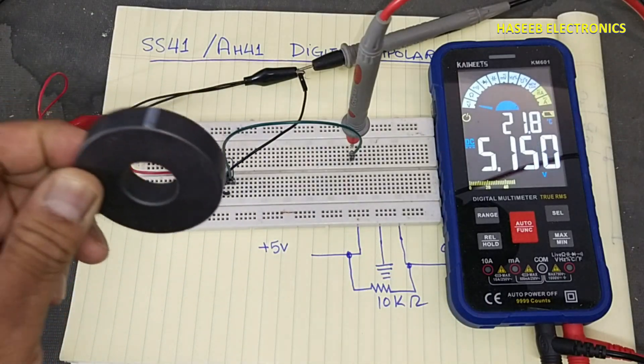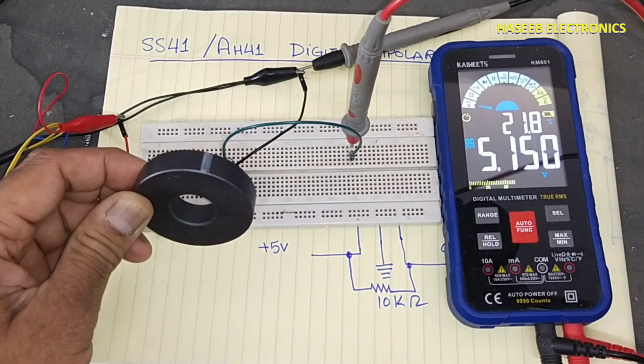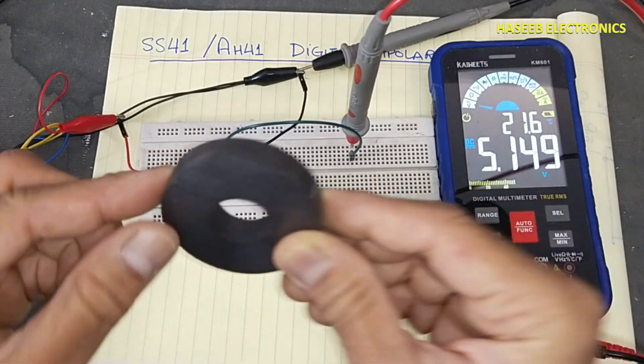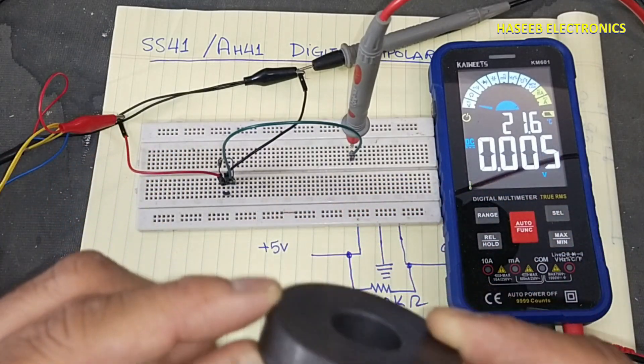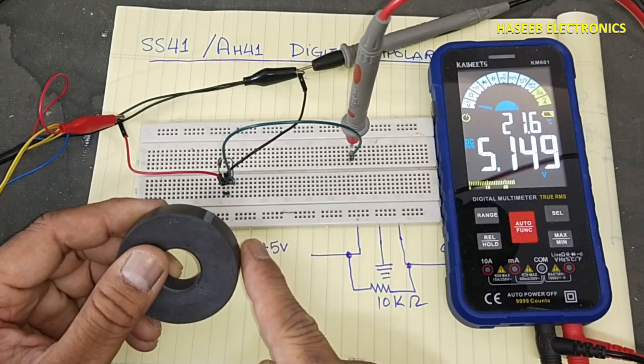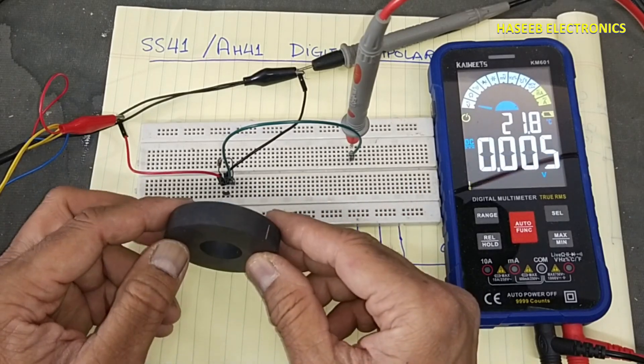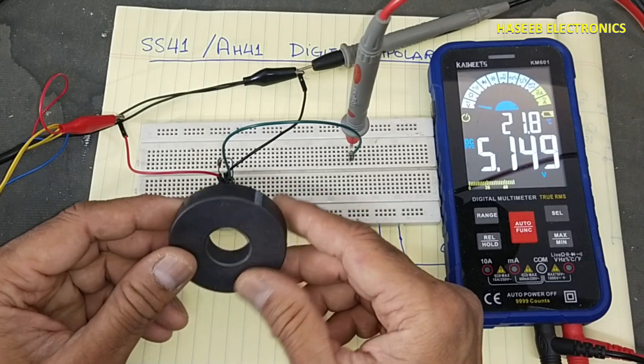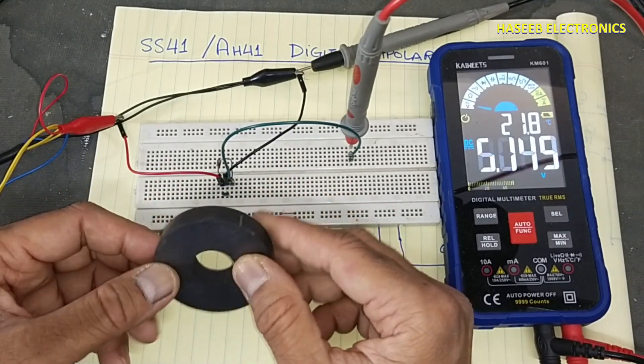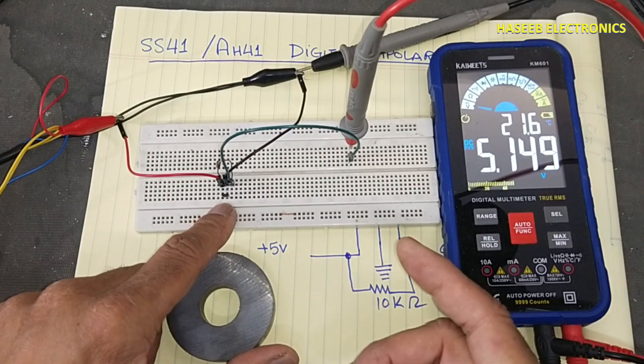This magnet now shows 0 volts. When the pole changes, 5 volts. When this pole is here, the output is high. When the pole changes to this side, output is low. High, low. This is a bipolar detector, detecting north and south.